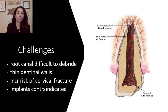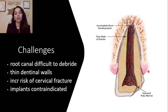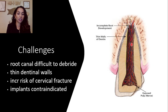Some of the challenges with these pediatric immature teeth is that the root canal can be difficult to instrument because there are thin dentinal walls and an increased risk of cervical fracture. We also know that in pediatric patients, implants are contraindicated. In this image you can see the thin dentinal walls, the incomplete root development, and the highly vascularized, innervated pulp tissue.